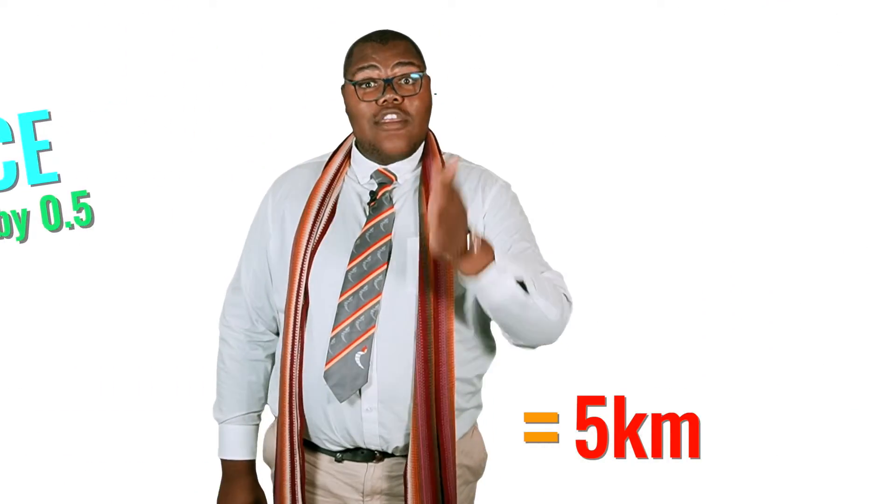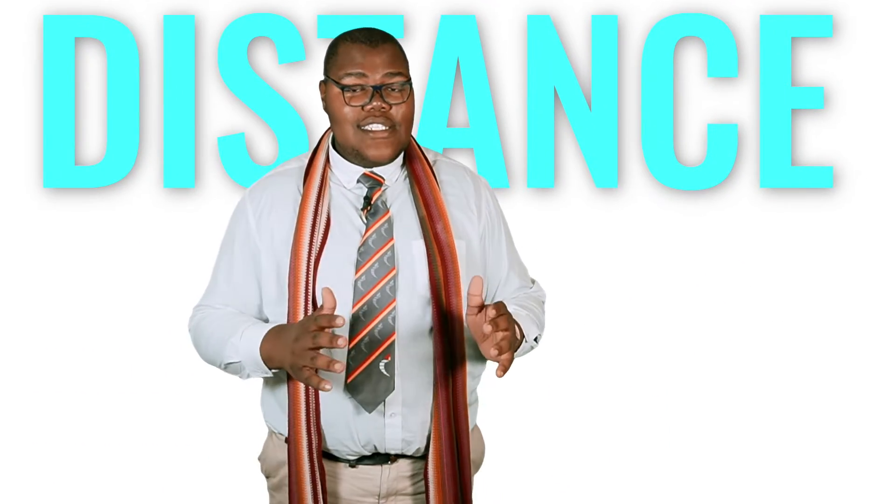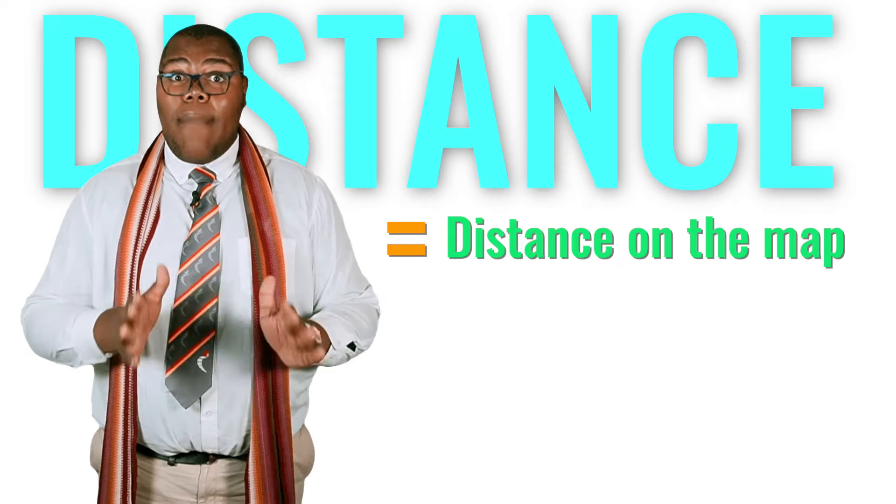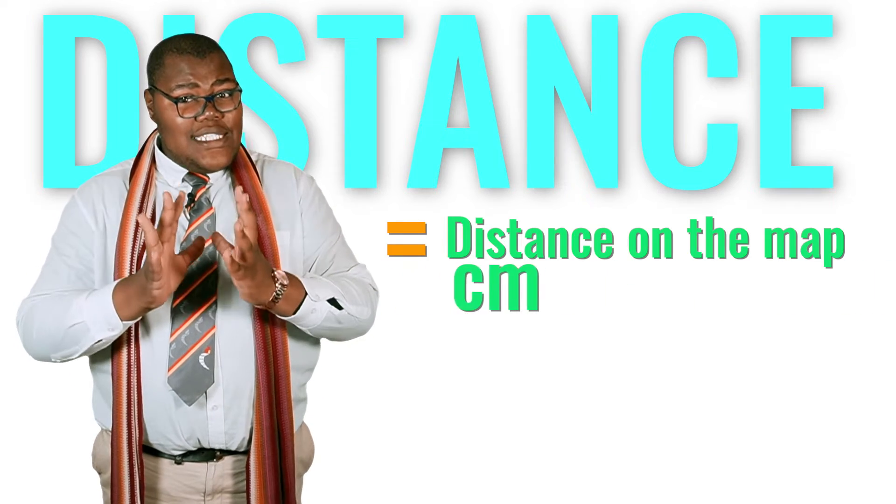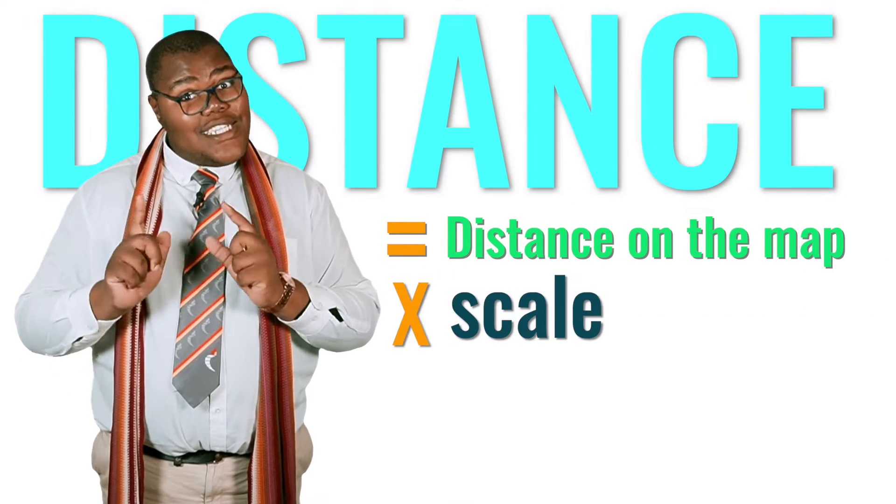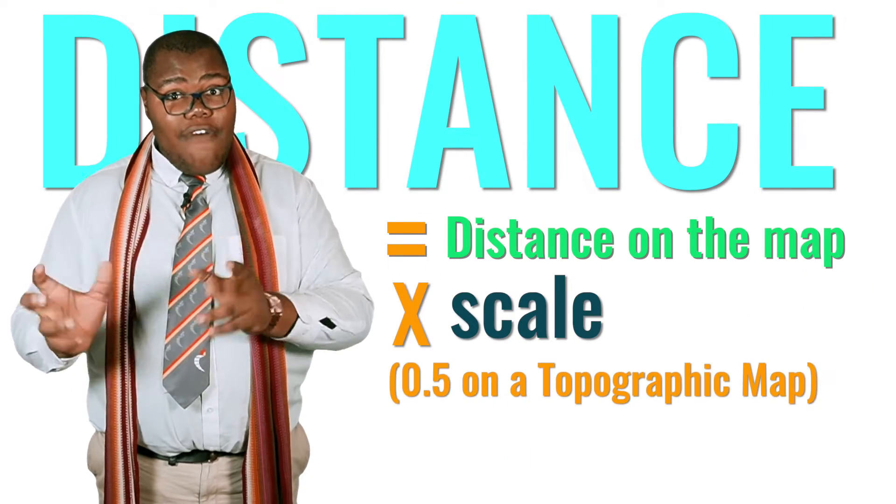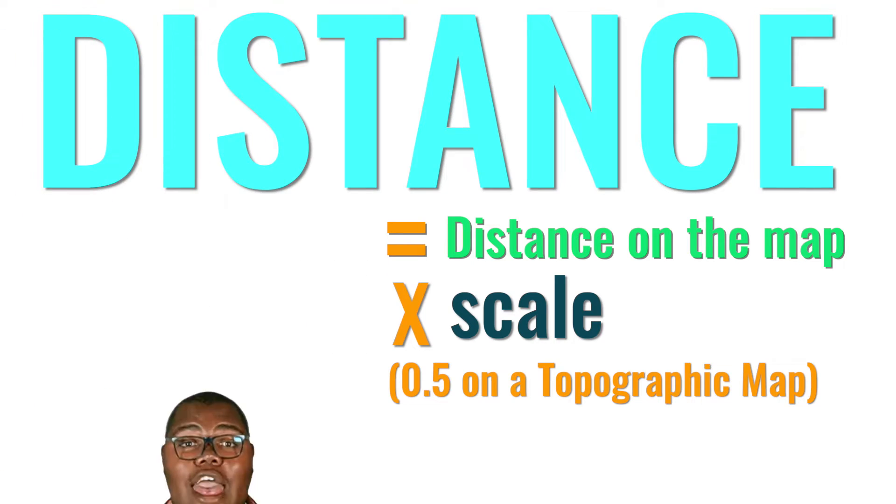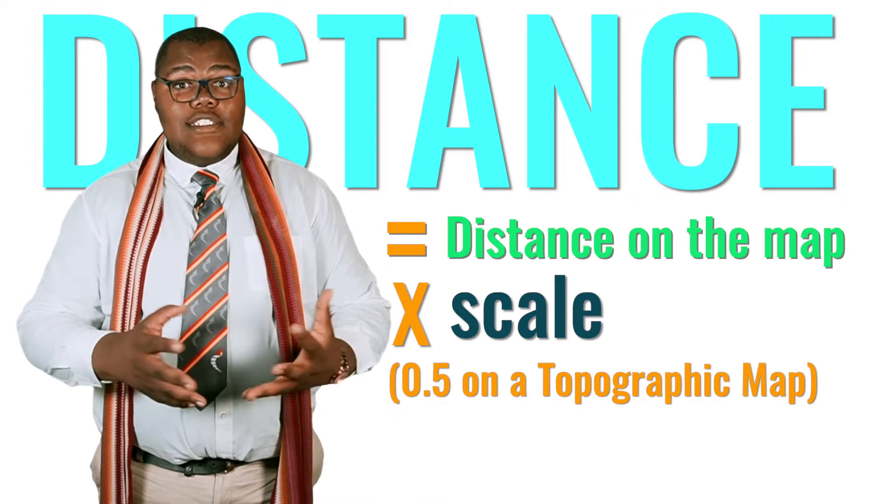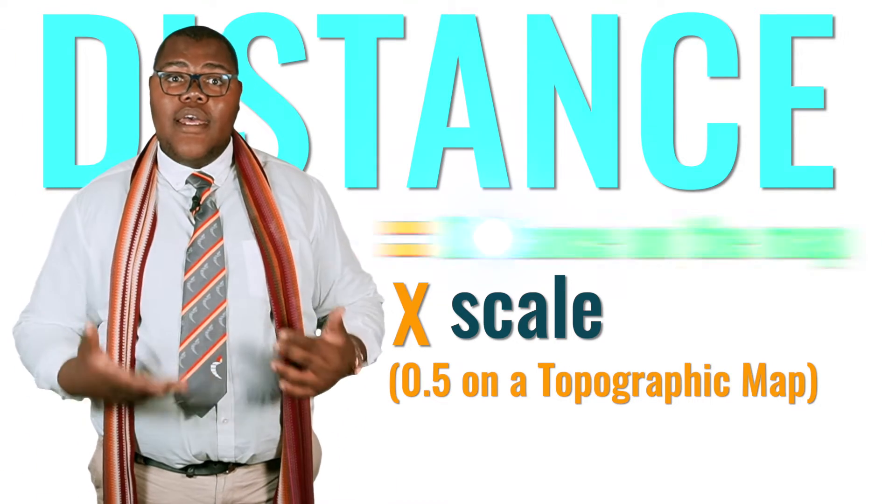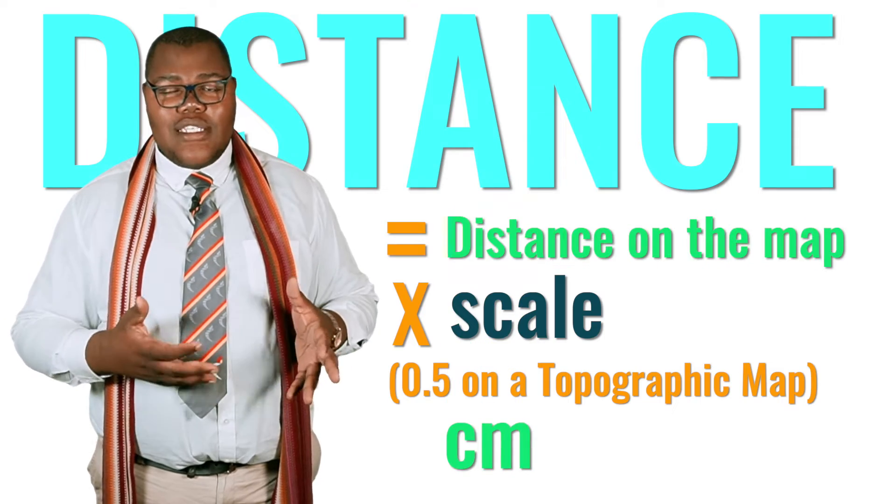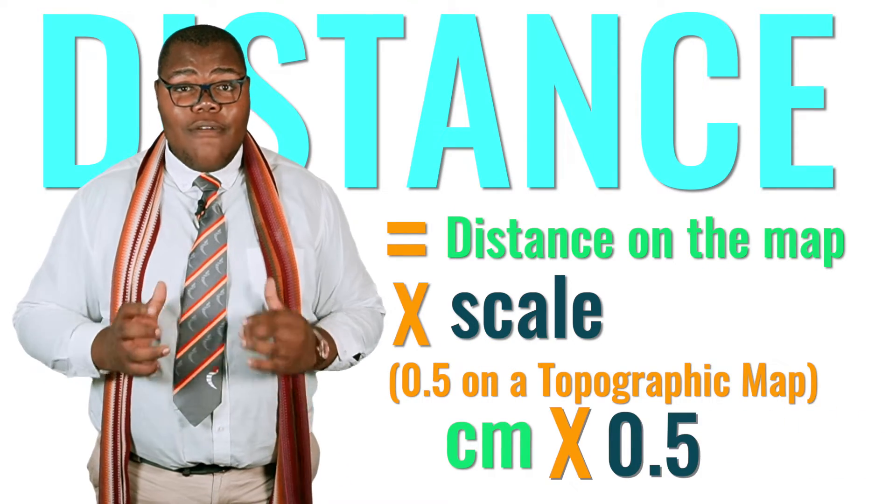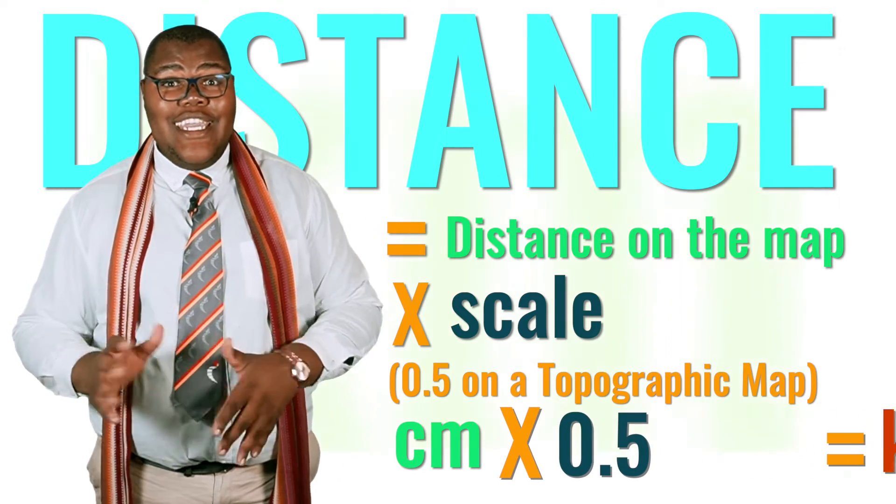Therefore, the formula for distance is, distance is equal to map distance, which is normally in centimetres, multiplied by the scale, which is 0.5 on a topographic map. Therefore, this means that we take the map distance in centimetres and multiply it by 0.5 which will give us the answer in kilometres.